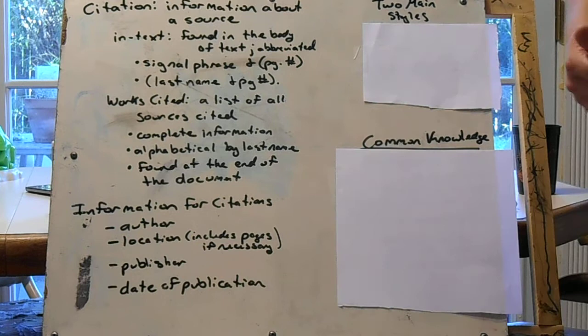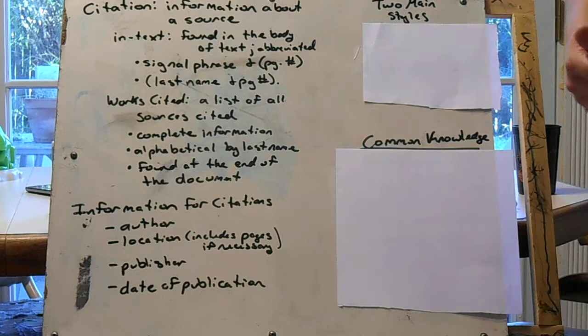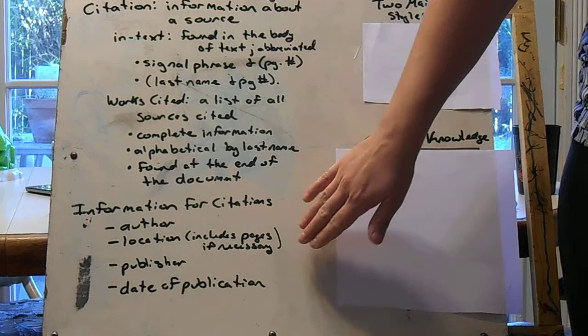We need to know where you found it. So if it's a book, we need to know the book name. If it's an article, we need to know the article and the journal you found it in. It also includes page numbers.